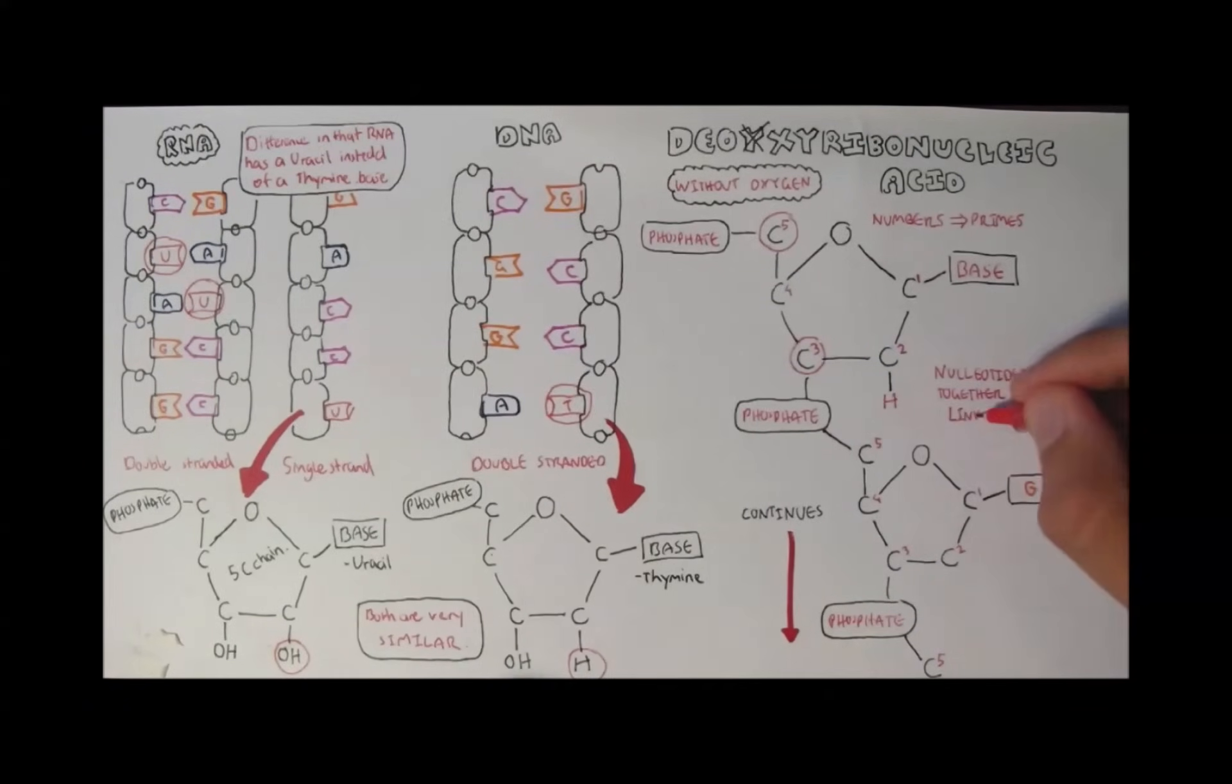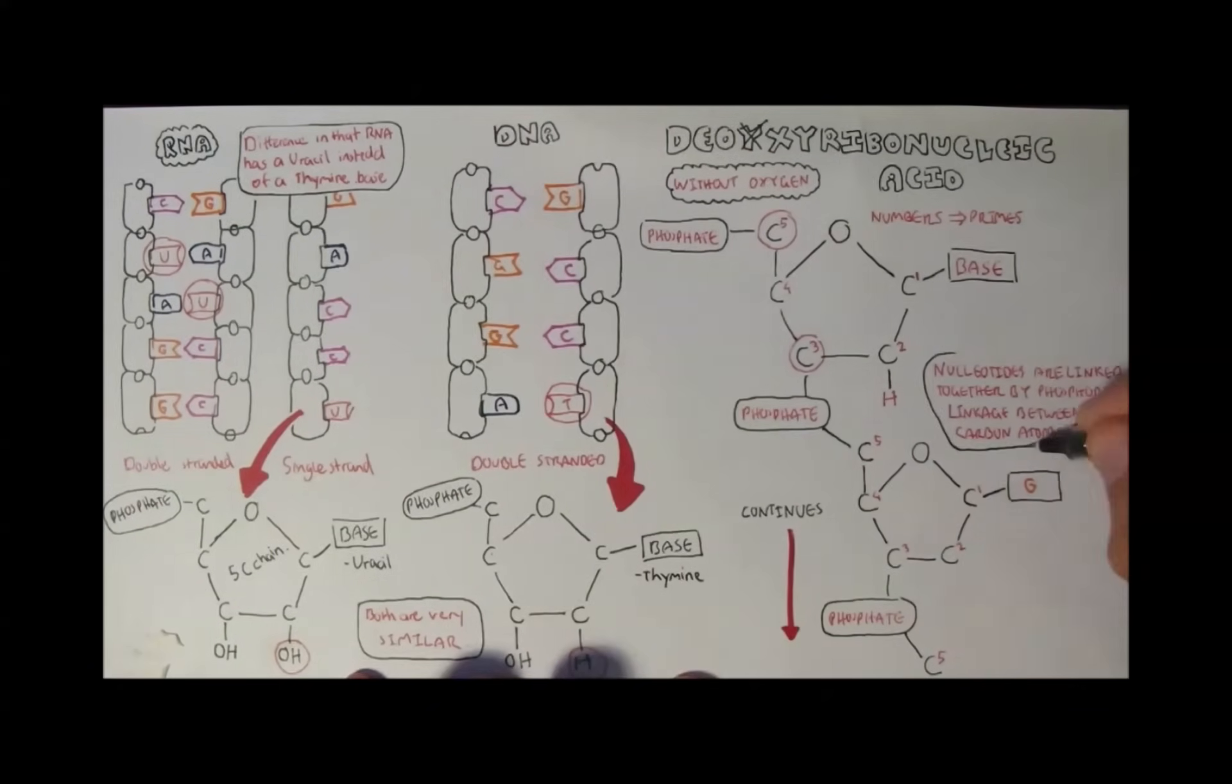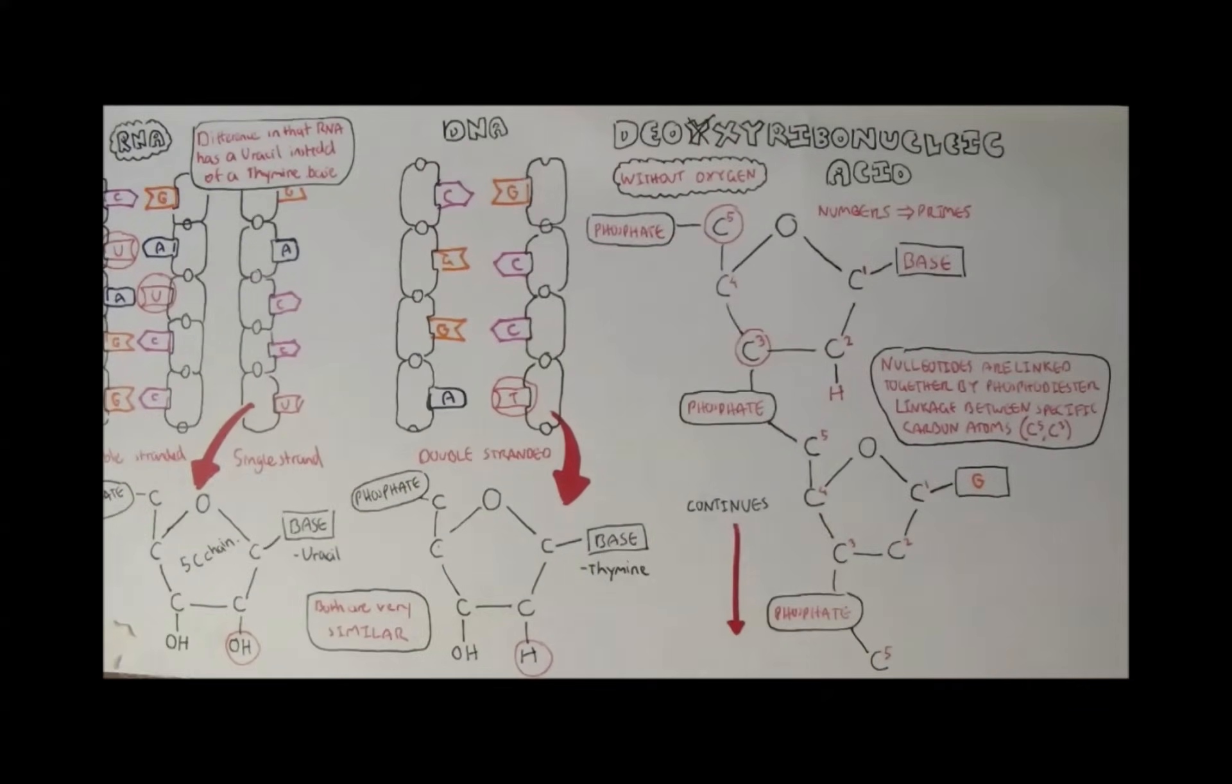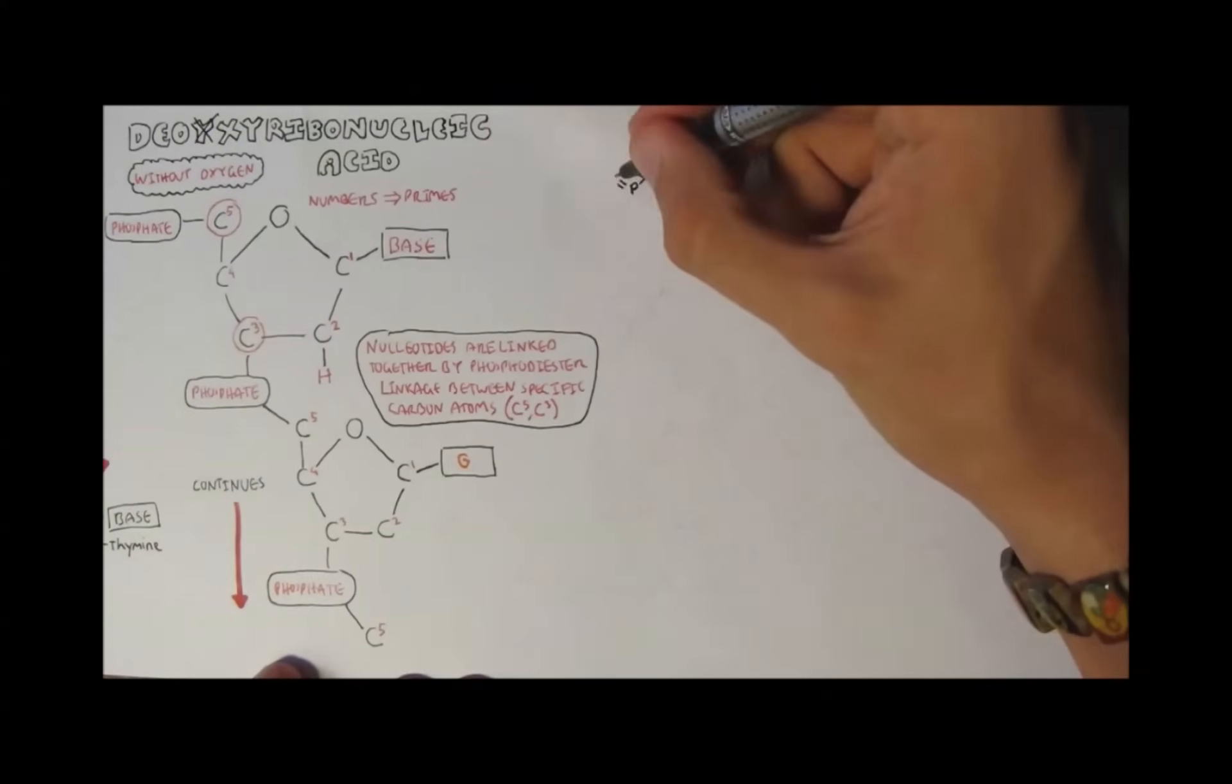From this diagram, we have learnt that the nucleotides are linked together by phosphodiester bonds, from carbons 3' and 5'. Let's take a closer look at this in more detail to get a better understanding.